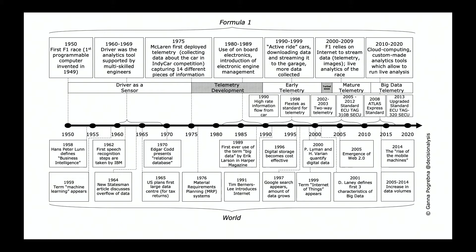By the year 2005, the standard ECU tag was developed. From around 2001, the development of big data as a term emerged. From 2005, Web 2.0 emerged and data increased in volumes very rapidly between 2005 and 2014. From 2014, we entered what we can call the rise of the mobile machines, with a lot of data captured on the track and away from Formula One circuits.